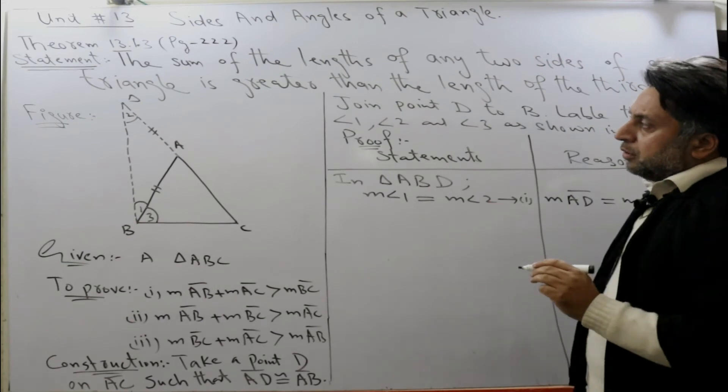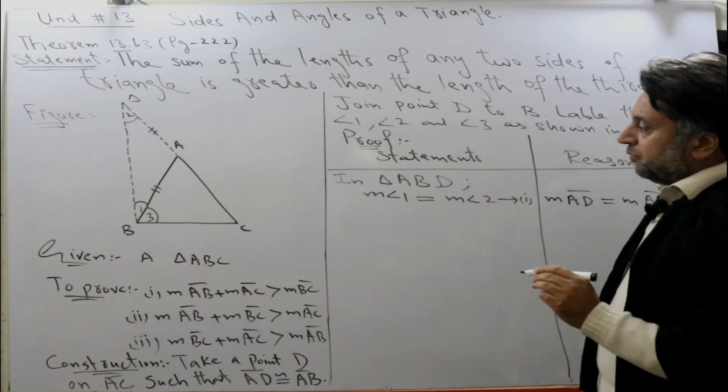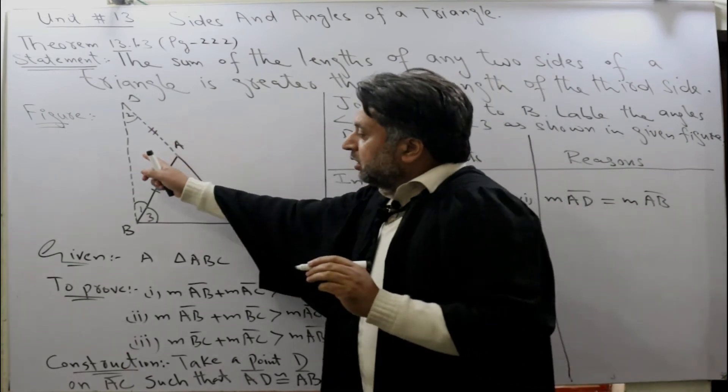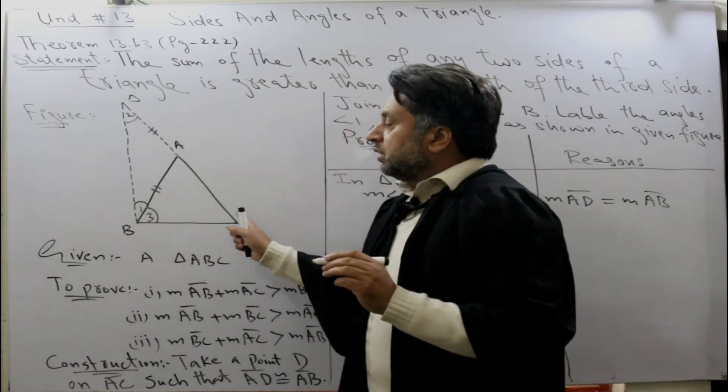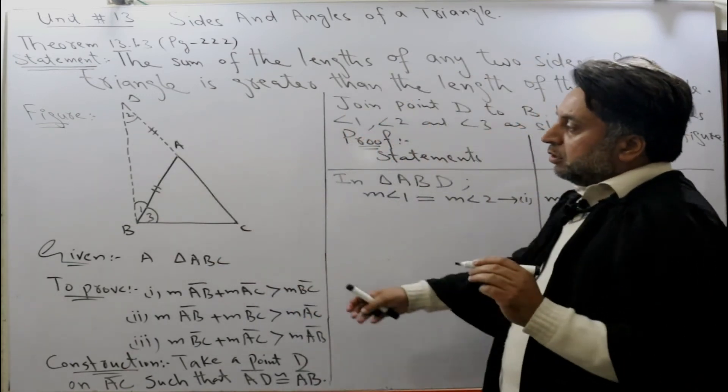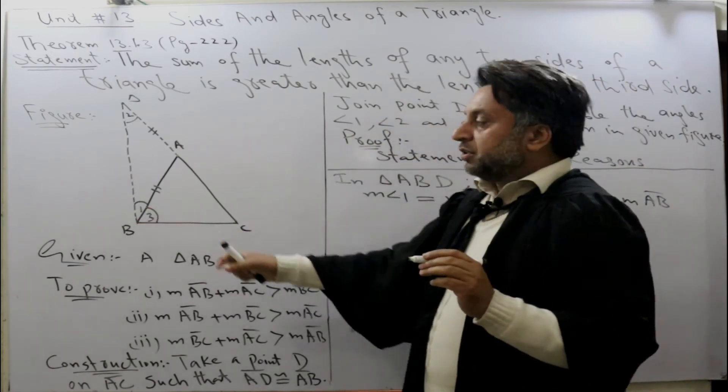From the figure, we can see that angle DBC is equal to the measurement of angle 1 plus the measurement of angle 3.